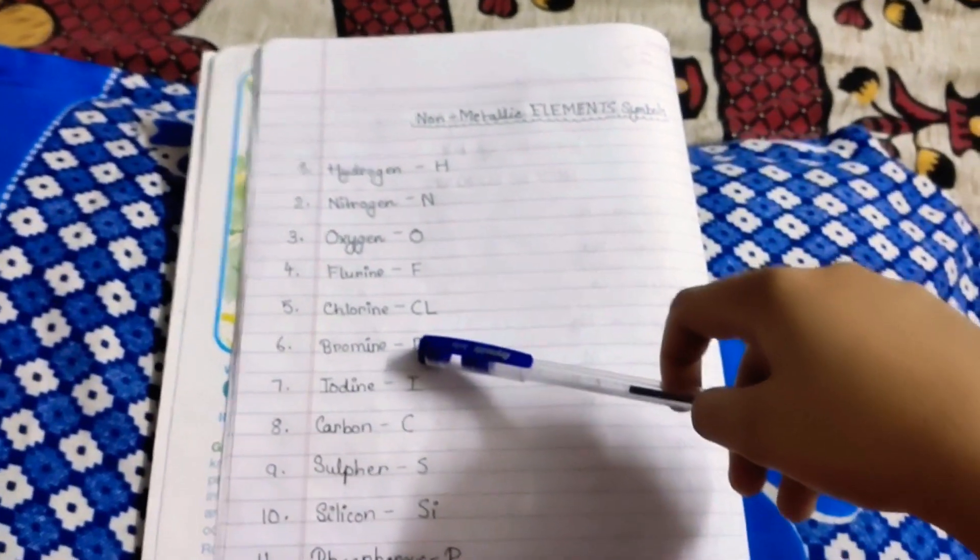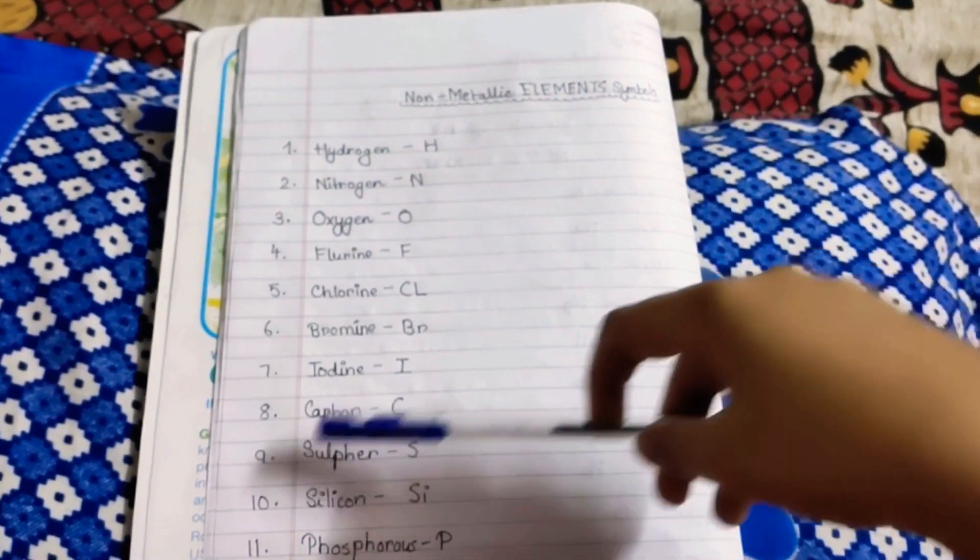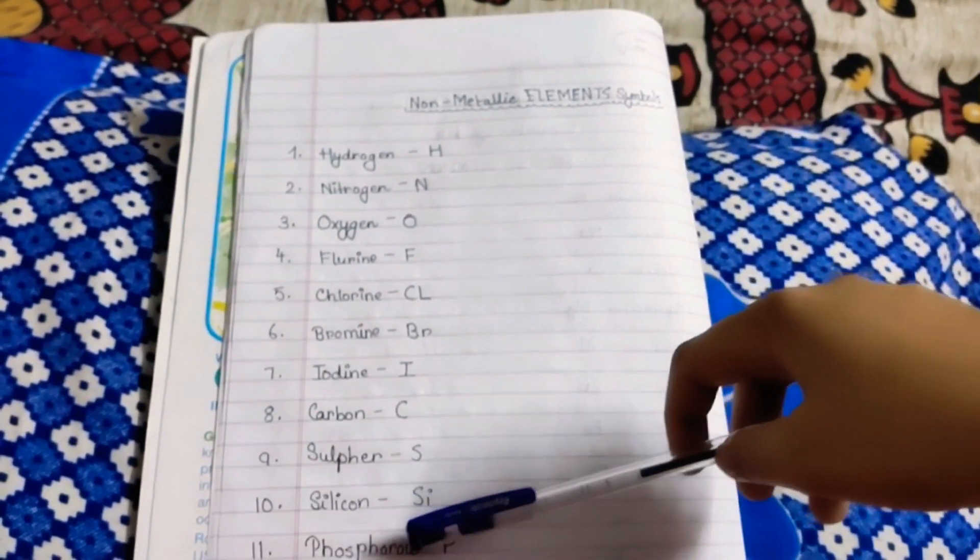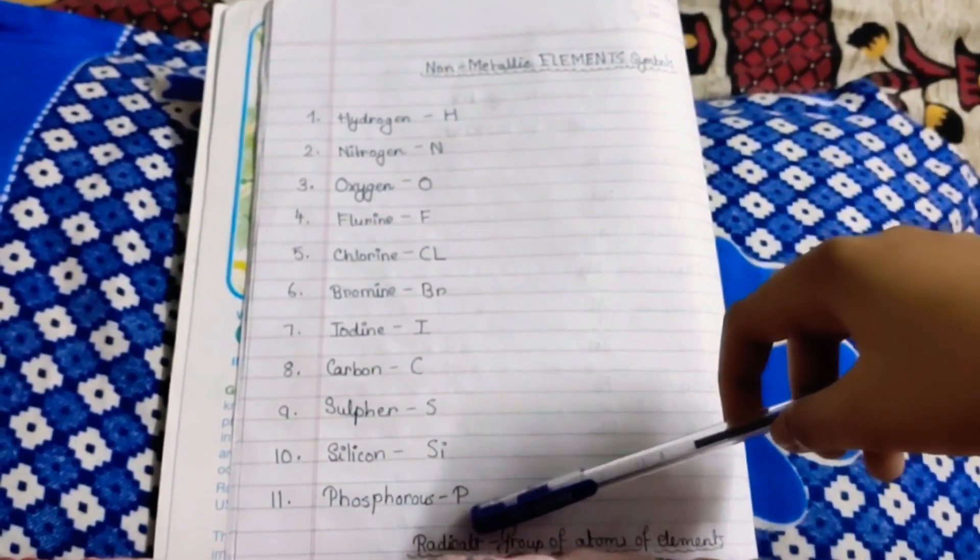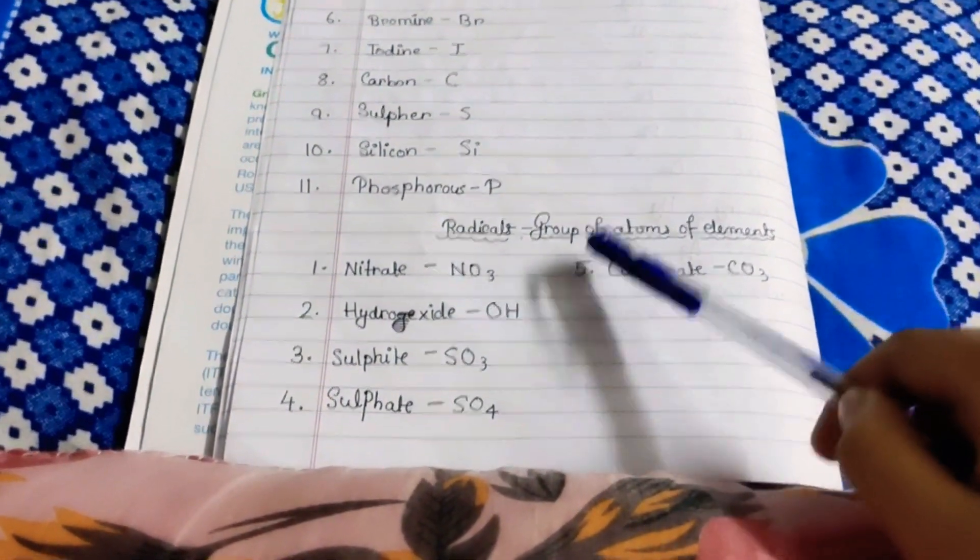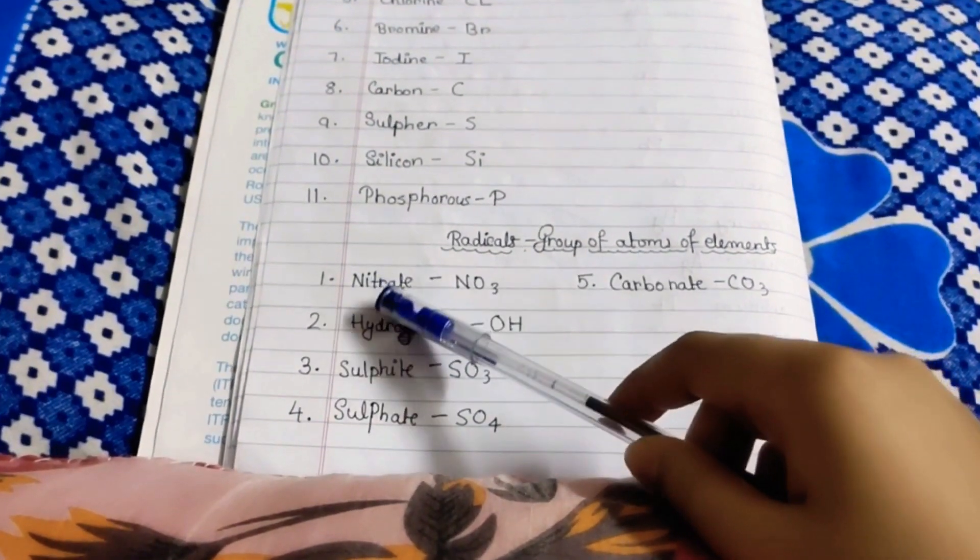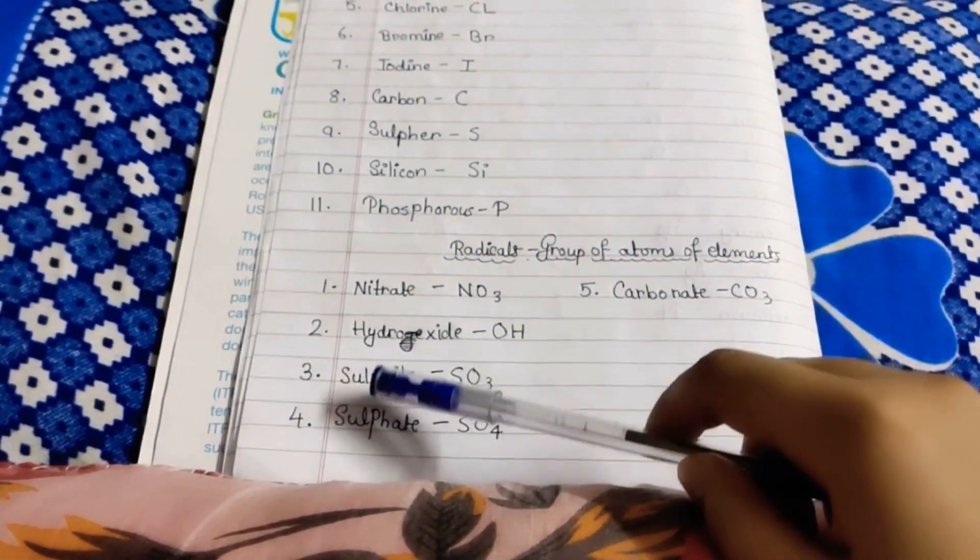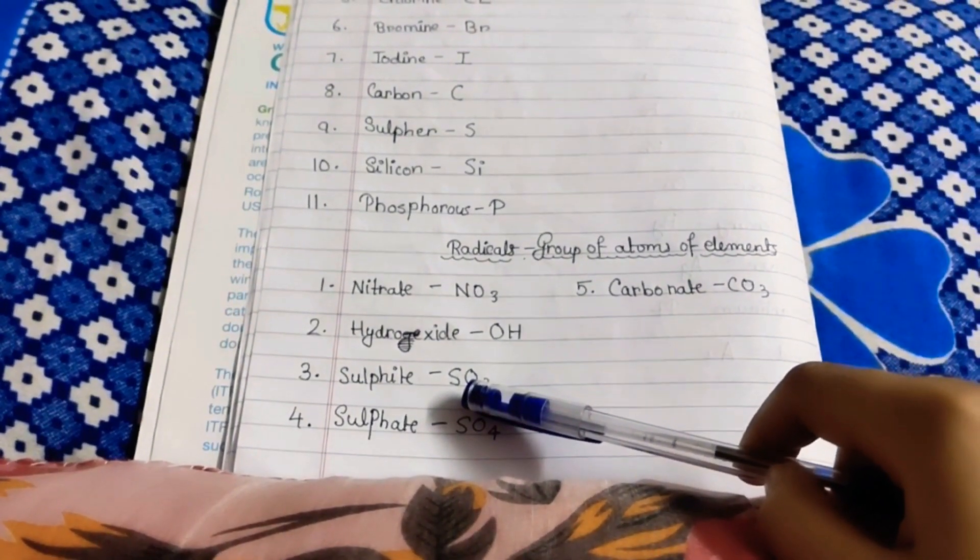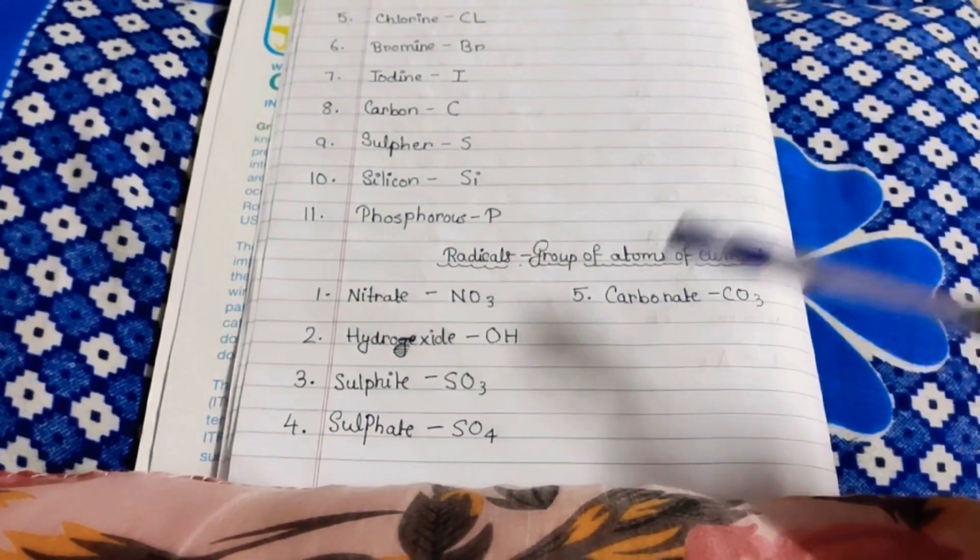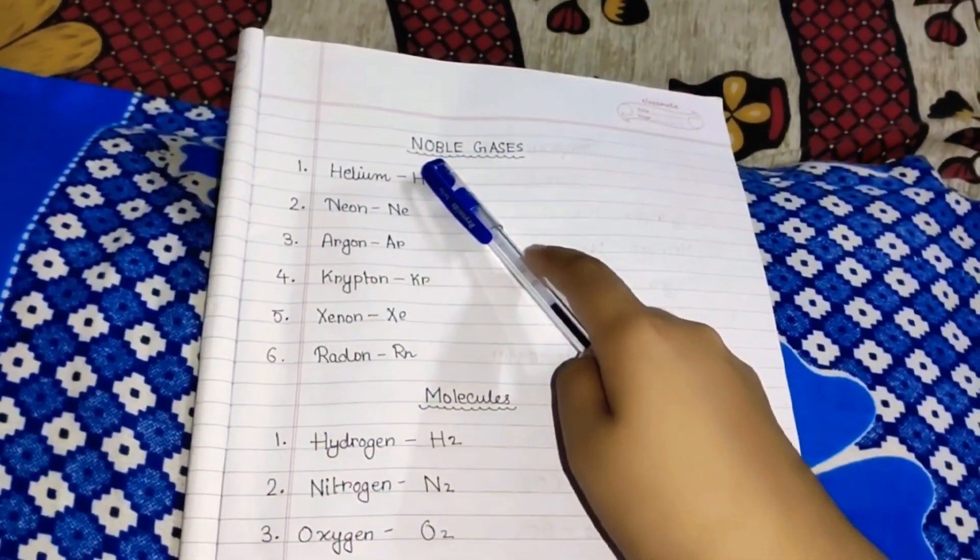Bromine Br, Iodine I, Carbon C, Sulfur S, Silicon Si, Phosphorus P. Now we will learn about the radicants, group of atoms of element. First is Nitrate, equals to NO3, three atoms of nitrate. Hydroxide OH, only one atom of hydroxide. Sulfite SO3, three atoms of sulfite. Sulfate SO4, four atoms of sulfate. Carbonate CO3, three atoms of carbonate.